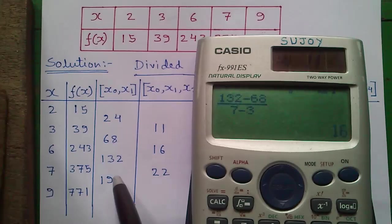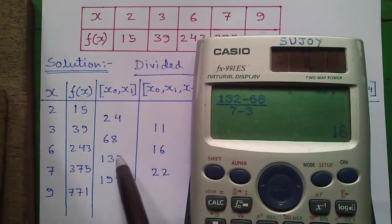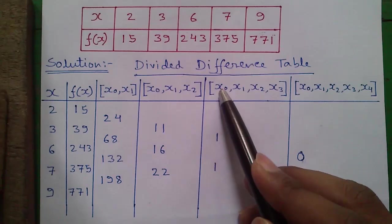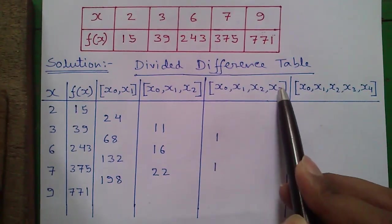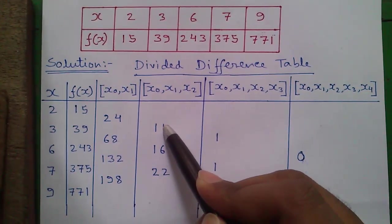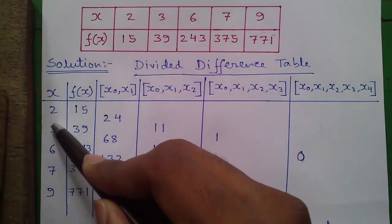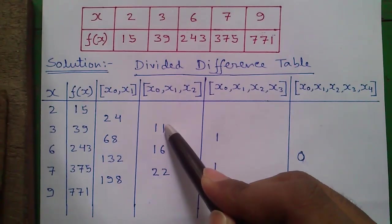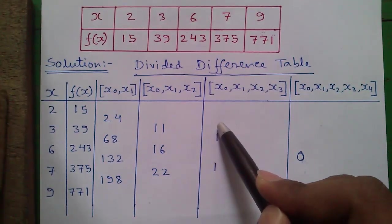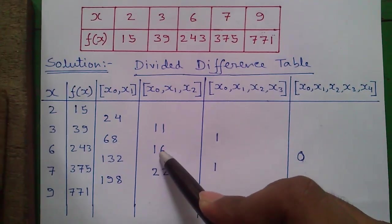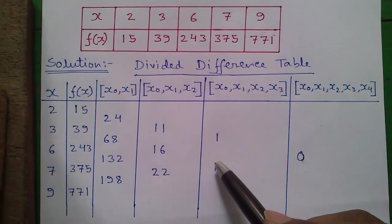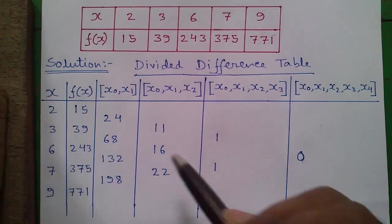Next, this number can be found by 198 minus 132 divided by 9 minus 6, with a gap of one number. Our next column is the x0, x1, x2, x3 column. This number can be obtained by 16 minus 11 divided by 7 minus 2, with a gap of two numbers. 16 minus 11 is 5 and 7 minus 2 is 5, so 5 divided by 5 is 1. Similarly, the next number is 22 minus 16, that is 6, divided by 9 minus 3, with a gap of two numbers — 6 divided by 6 equals 1.